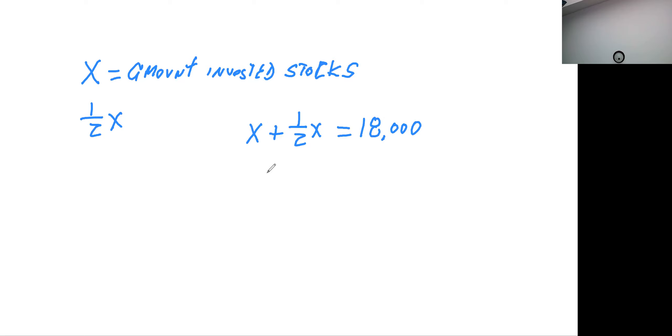When you combine these two, remember that 1 plus 1/2 is 1.5x equals 18,000. You divide each side by 1.5, or you could do it in fractions. If you did that, you would say x equals 12,000. That's how much you do in stocks. How much do you do in bonds? That would be half that, so half of 12,000 is 6,000, and that's what you do in bonds.